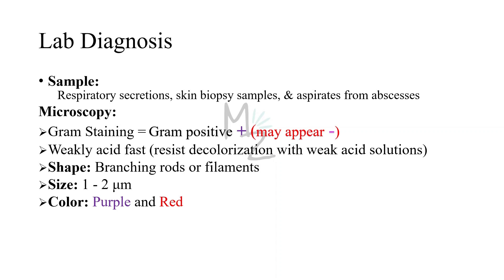Lab diagnosis: We need samples of respiratory secretions to diagnose pulmonary nocardiosis, skin biopsy samples or skin scrapings to diagnose cutaneous nocardiosis, and aspirates from abscesses for brain abscesses. On gram staining, the bacterium appears gram positive but may appear gram negative because it is weakly gram positive. On acid fast staining, it is weakly acid fast. The staining process uses a weaker solution of hydrochloric acid to decolorize, but Nocardia asteroides resists decolorization with weak acid solutions.